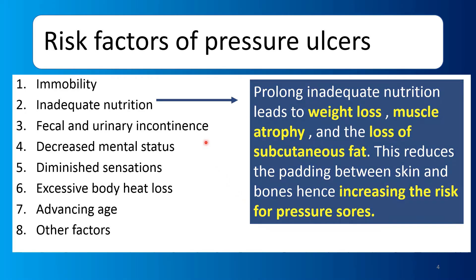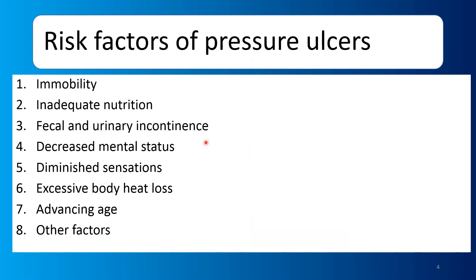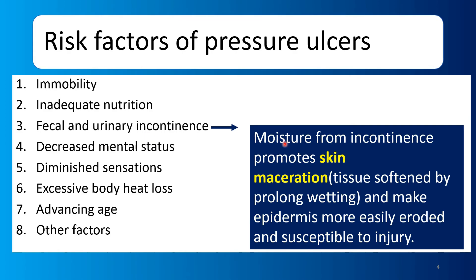The third risk factor is fecal and urinary incontinence. This means either feces or urine dribbling involuntarily — the patient has no control over urination. What happens? Constant dribbling keeps the skin moist. That is why we develop pressure ulcers. When moisture stays on the skin, it causes maceration — the tissues become very soft, and soft tissue is more prone to pressure ulcers.